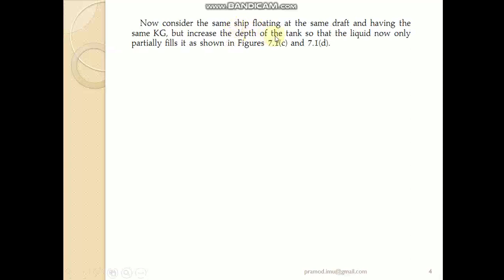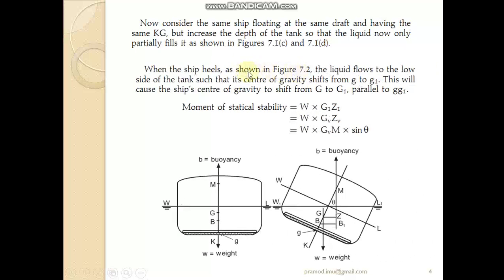Now consider the same ship floating at same draft and having the same KG, but increase the depth of the tank so that the liquid now only partially fills it. Then when the ship heels, the liquid flows to the low side of the tank. Now the mass of the liquid in the tank also shifts to the low side, and this will actually lead to a change in center of gravity of the ship, which did not happen in the previous case.